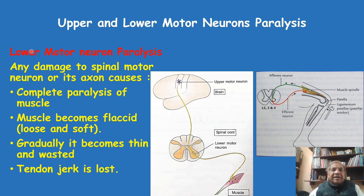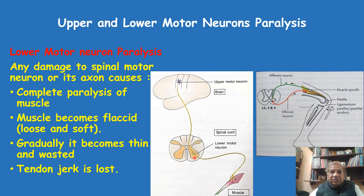Let us now come to the second part: upper and lower motor neuron paralysis. First, we will see the paralysis due to the lower motor neuron. Any damage to the motor neuron present in the spinal cord — the lower motor neuron — if it is damaged because of injury or infection, for example polio, which destroys these motor neurons, or if the spinal nerves going up to the muscle are cut or destroyed, then this kind of paralysis will happen.